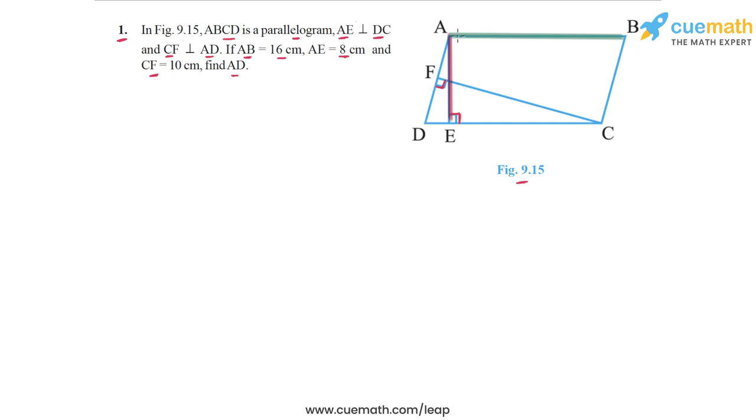Or, if you take the other side AD as the base, then the corresponding altitude of the parallelogram is CF. So the area of the parallelogram can also be written as AD into CF. This means that the area of the parallelogram can be written in two different ways: AB into AE, and it can also be written as AD into CF.